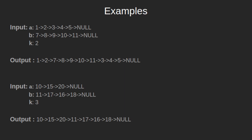Let's see another example. We have the first linked list as 10, 15, 20, and also we have the second linked list as 11, 17, 16, 18, and k is given as 3. After inserting the second linked list at position 3 of the first linked list, we get the linked list as 10, 15, 20, 11, 17, 16, 18.